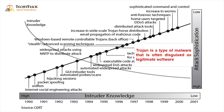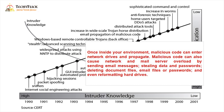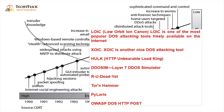Next, Windows-based Remote-Controllable Trojans. A Trojan virus can be used to hack the system. Then there is Email Propagation of Malicious Code — a type of malicious code sent via email. During 1998 to 1999, Trojan virus distribution increased.